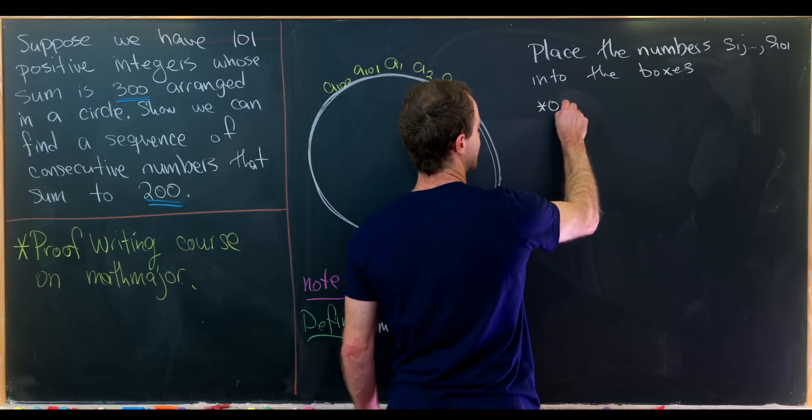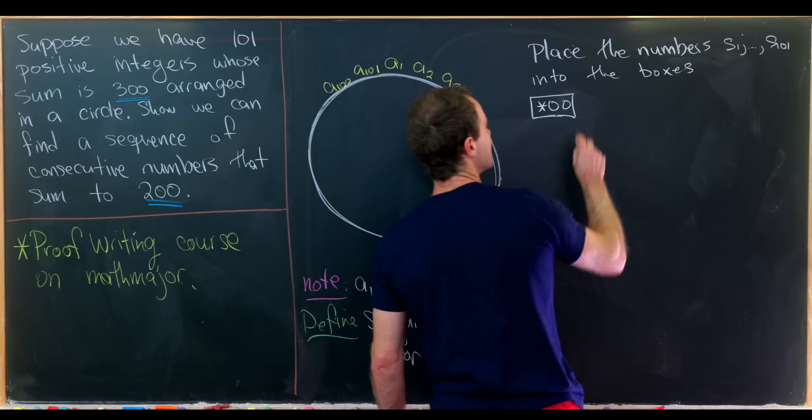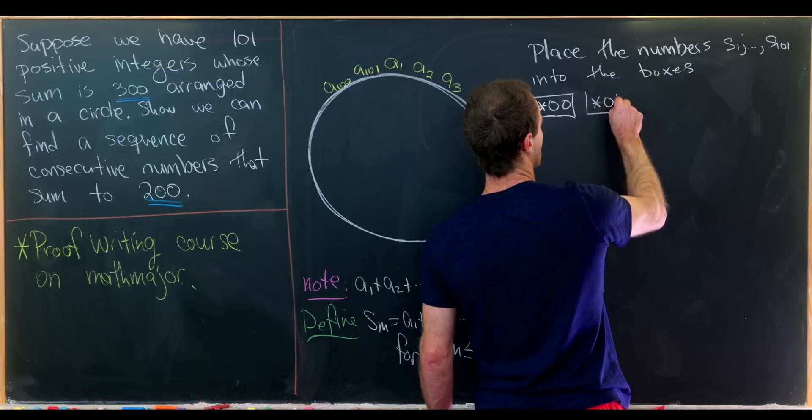Let's place the numbers s1 to s101 into the boxes written as follows. So we've got one box for numbers that end in two zeros. So I'll just write it as star 00.